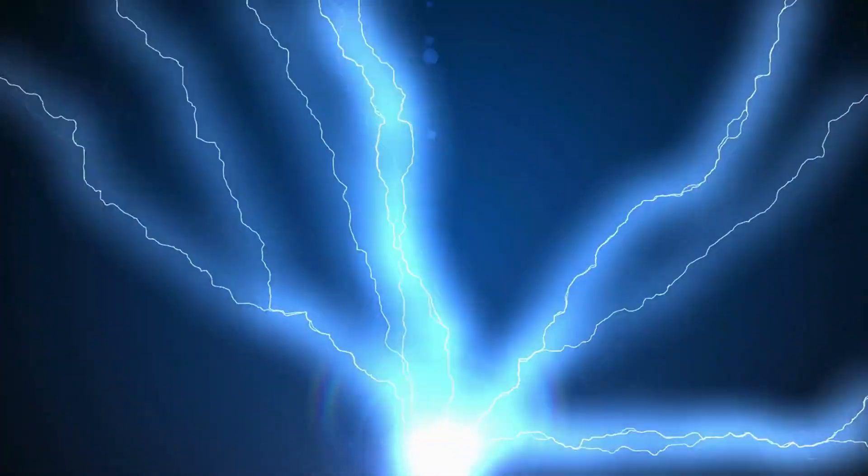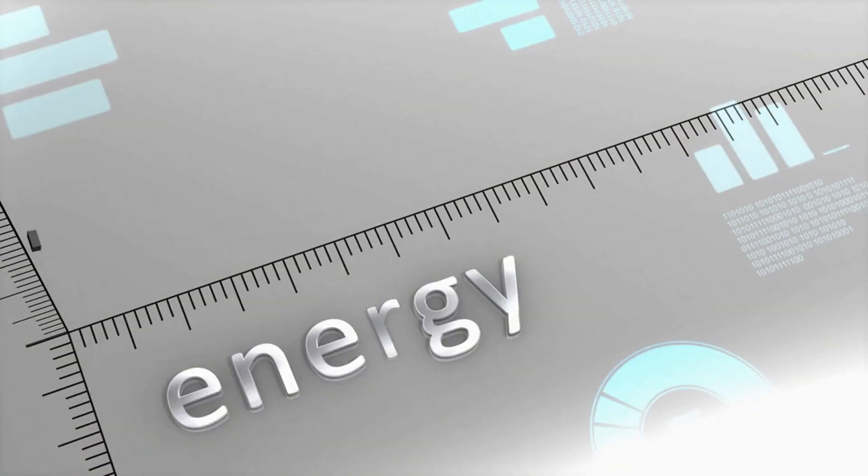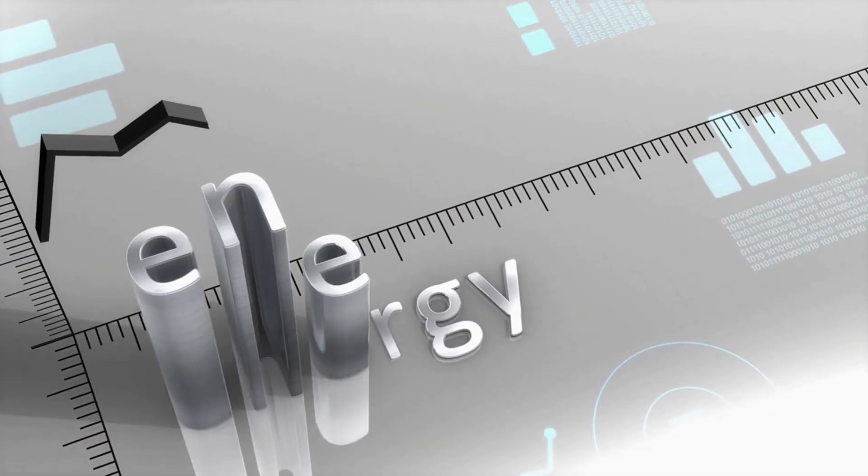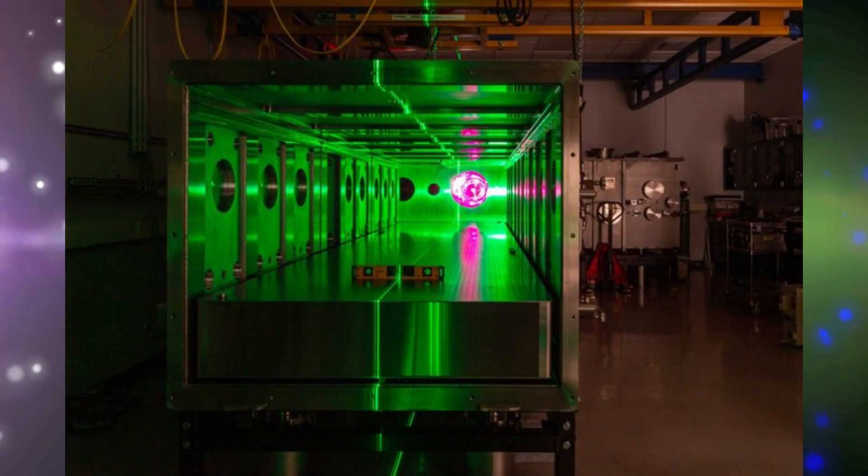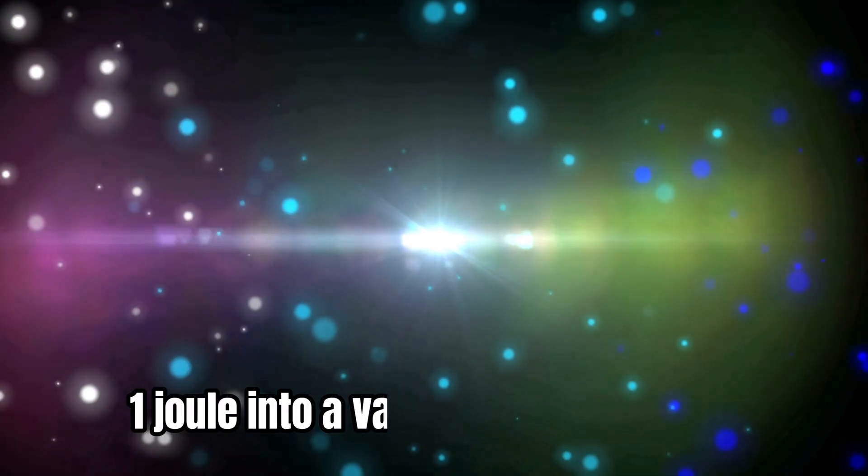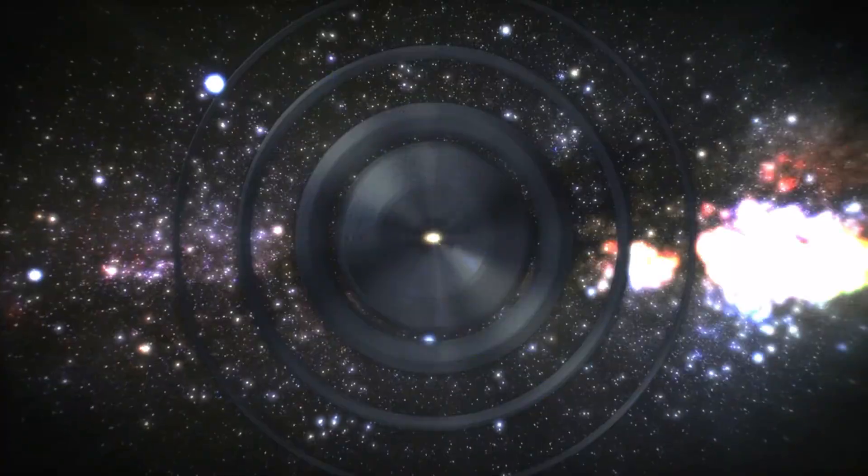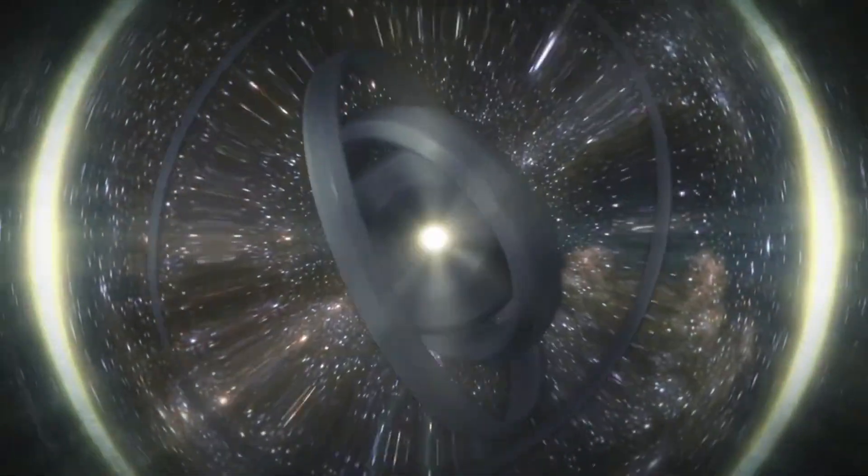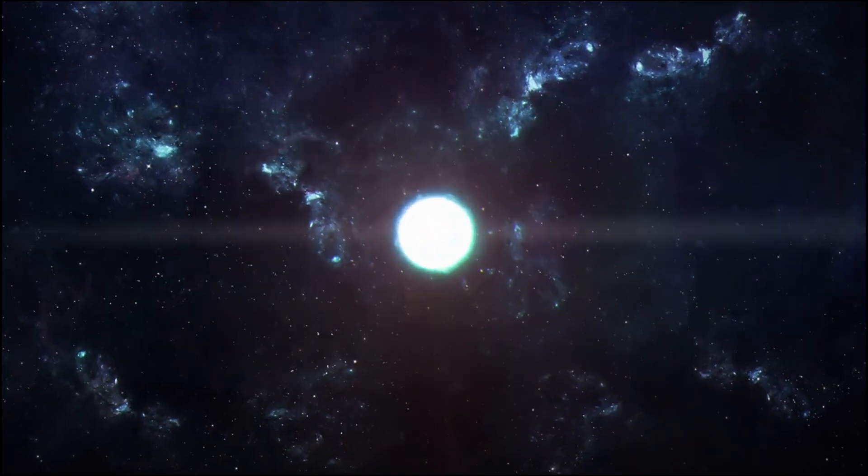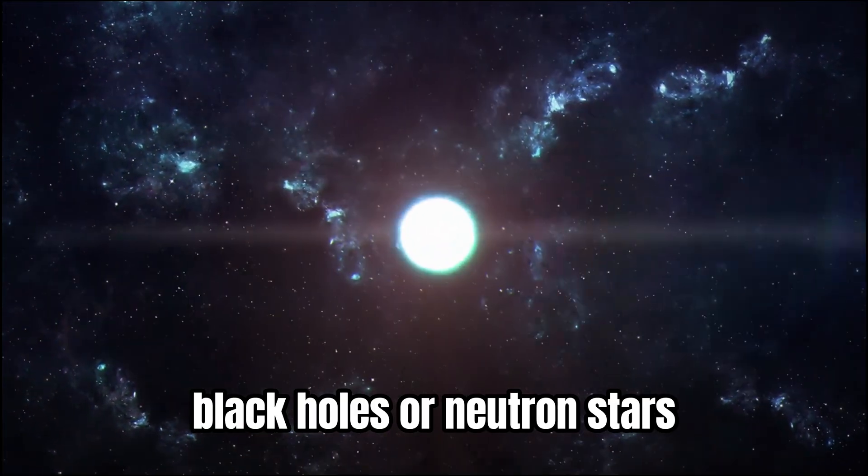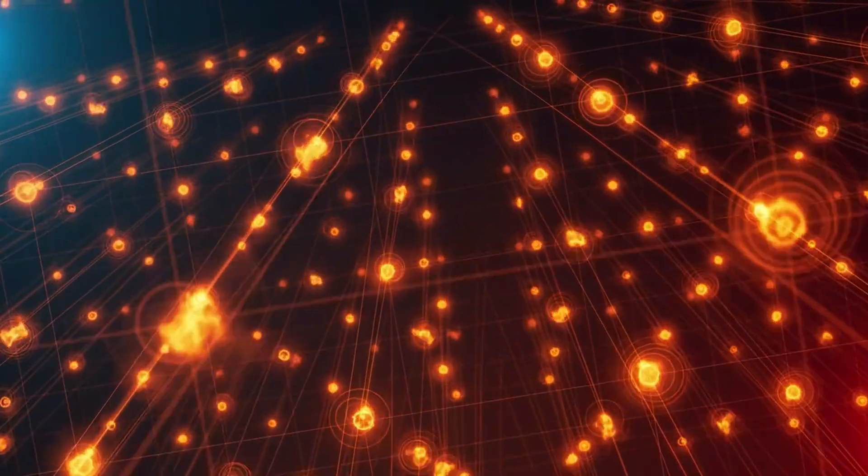Because power here doesn't mean continuous electricity. It's about energy density in time. ZEUS compresses a small amount of energy, around one joule, into a vanishingly short burst, creating a momentary flash of unimaginable intensity. In those moments, the laser can strip atoms apart, tear electrons from nuclei, and even distort the vacuum of space itself, a phenomenon that only occurs in the vicinity of black holes or neutron stars. That's not science fiction. It's the new frontier of experimental physics.